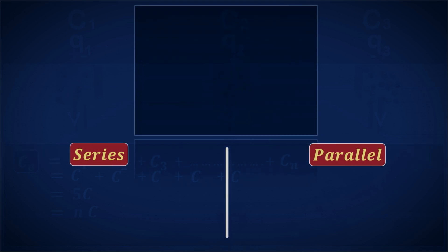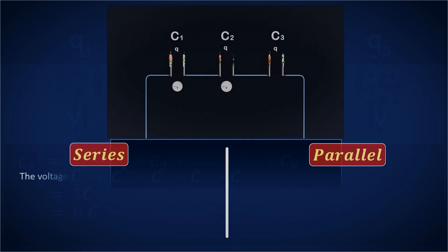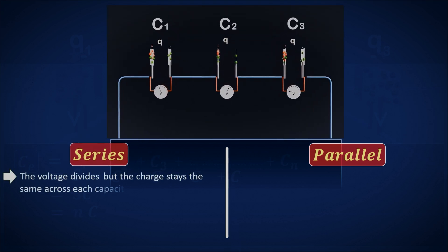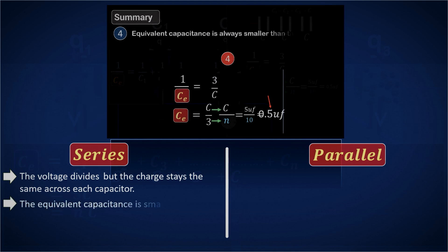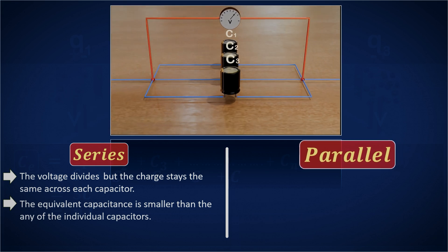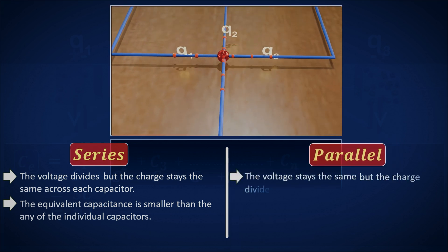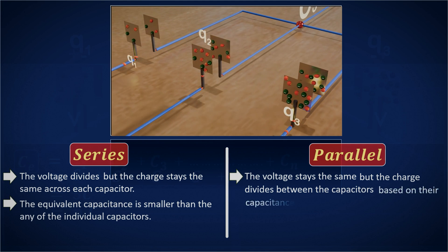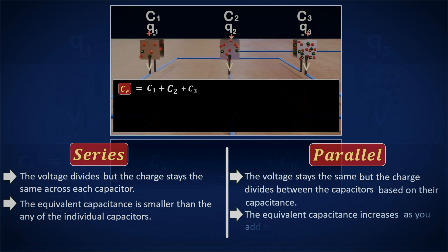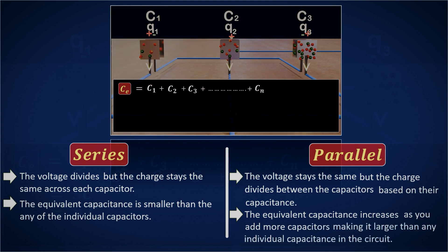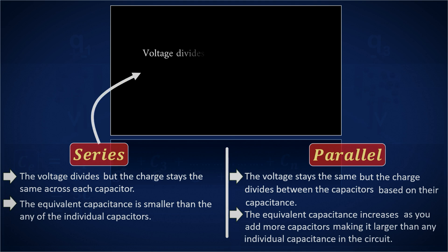To wrap it up, let's quickly compare this to the series combination we studied in the last video. In a series combination, the voltage divides, but the charge stays the same across each capacitor. The equivalent capacitance is smaller than any of the individual capacitors. In a parallel combination, the voltage stays the same, but the charge divides between the capacitors based on their capacitance. The equivalent capacitance increases as you add more capacitors, making it larger than any individual capacitance in the circuit. So, in short, series: voltage divides, charge stays the same. Parallel: charge divides, voltage stays the same.